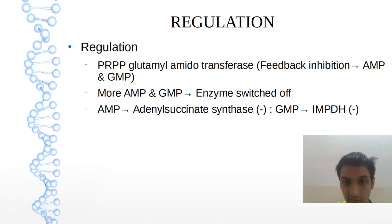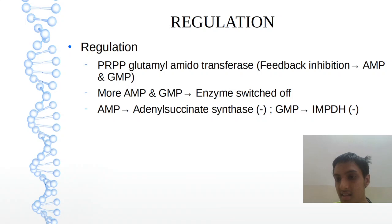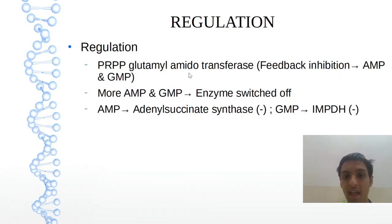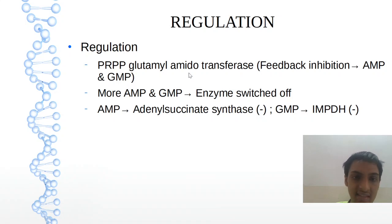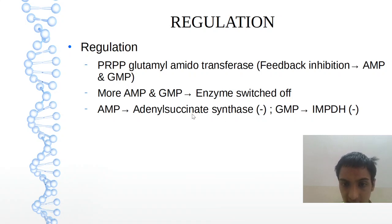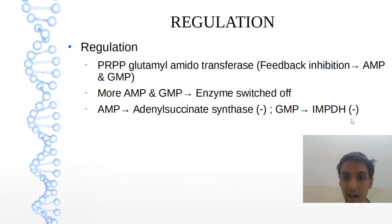Regulation is very similar to pyrimidine — in pyrimidine we said aspartate transcarbamylase by feedback inhibition. Same here: PRPP glutamyl amidotransferase will do the same. When AMP and GMP are in excess, the enzyme is switched off. AMP will inhibit adenyl succinate synthetase. GMP will inhibit IMP dehydrogenase.